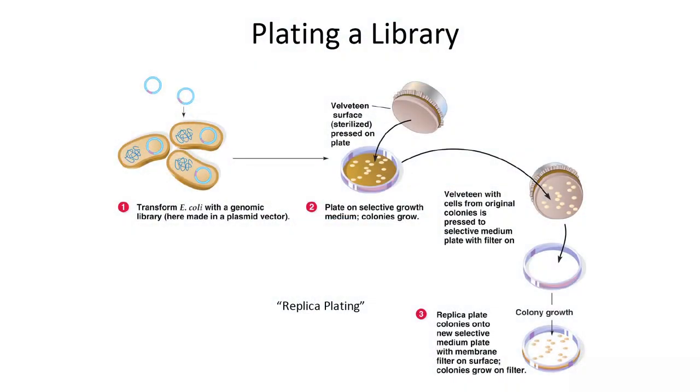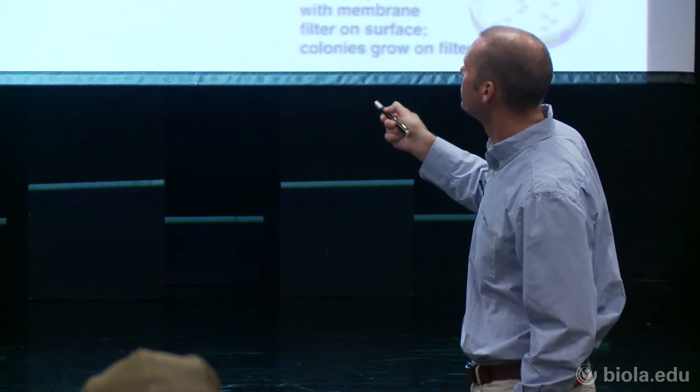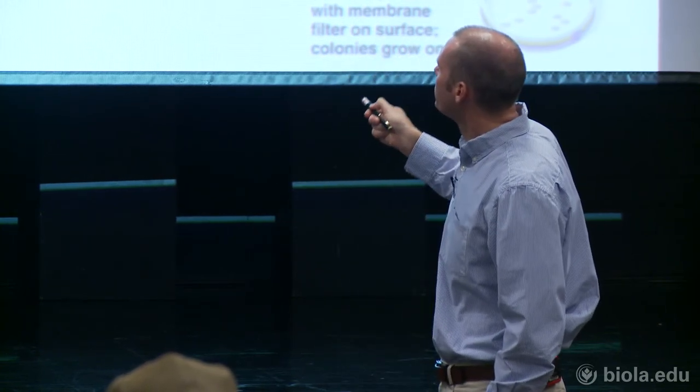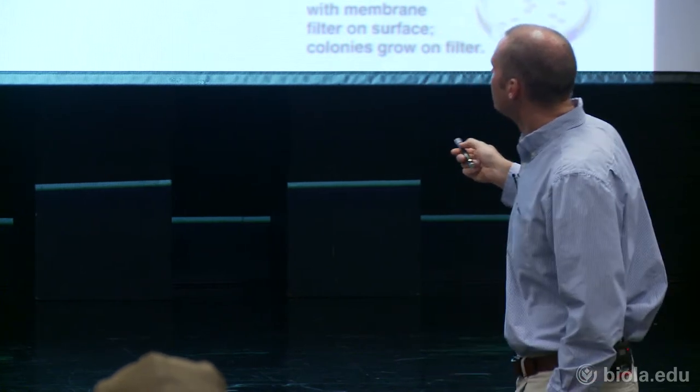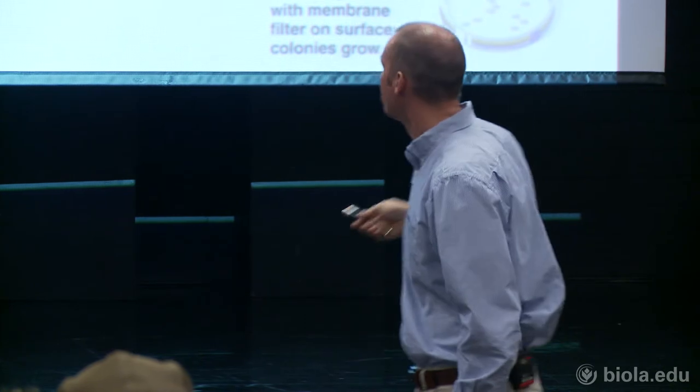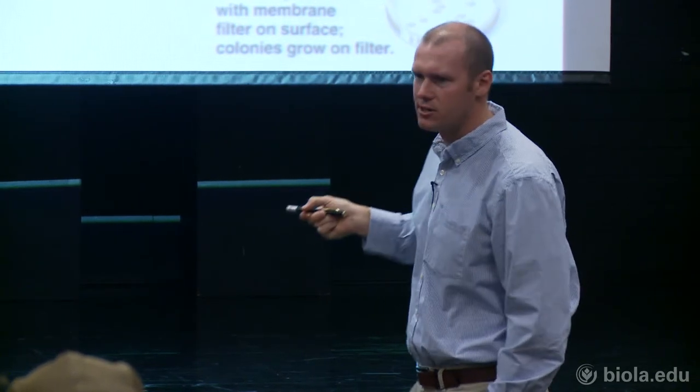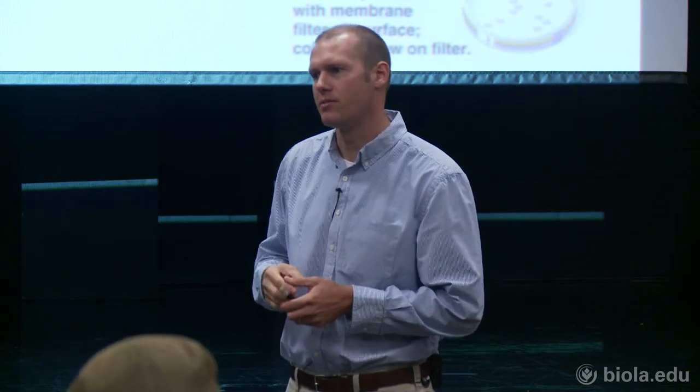When creating a library, you take whatever pieces you generated and clone them all into vectors, then get all those vectors transformed into bacteria, and plate those bacteria out on a series of agar plates. You'd take your genomic library — basically a bunch of vectors containing all these little different inserts — transform bacteria with all of them, plate them out, and generate a bunch of different colonies. To capture a whole genome you'd probably need a dozen plates with hundreds of colonies each.